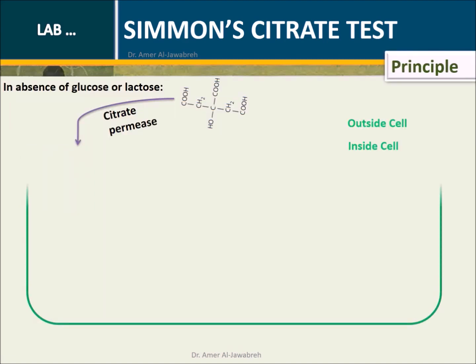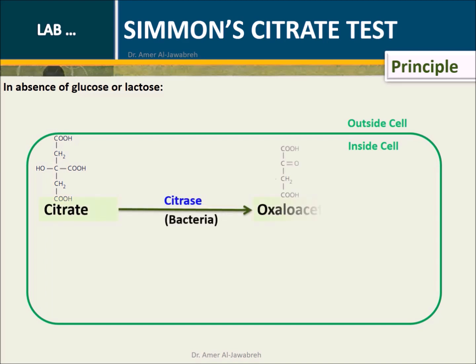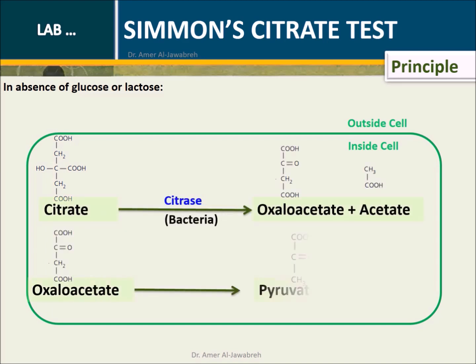In the absence of glucose or lactose, citrate enters the cell via the enzyme permease. Citrate is then converted to oxaloacetate and acetate by citratase. Subsequently, oxaloacetate is converted to pyruvate and carbon dioxide.